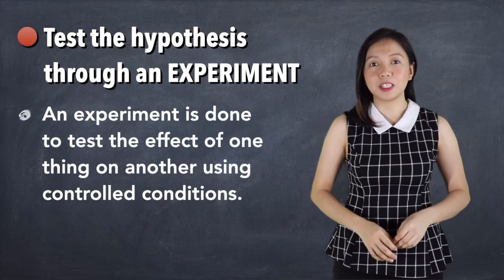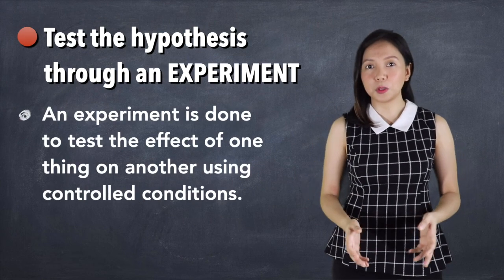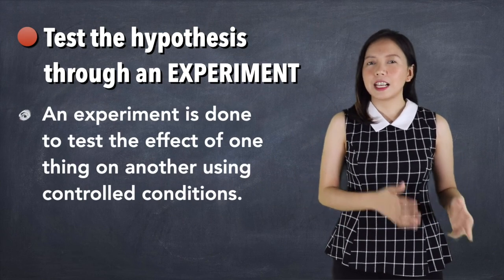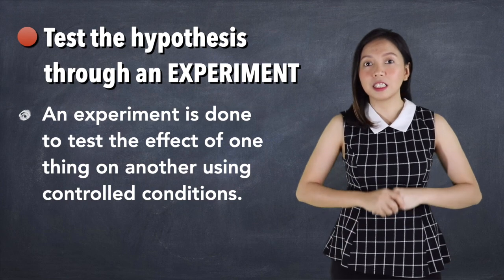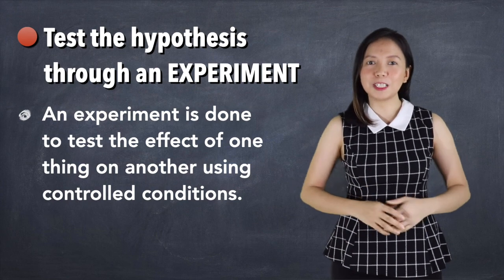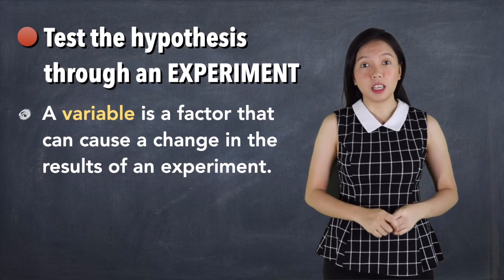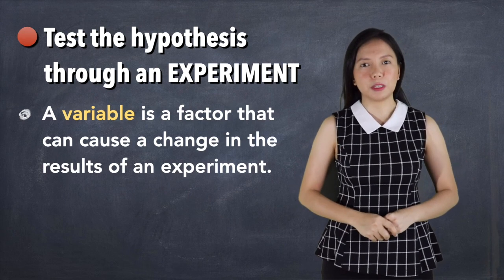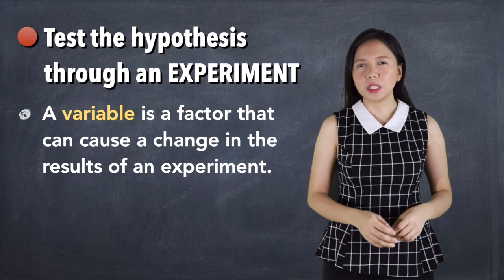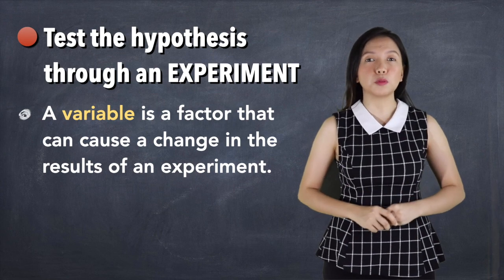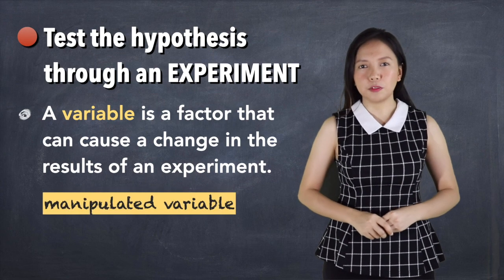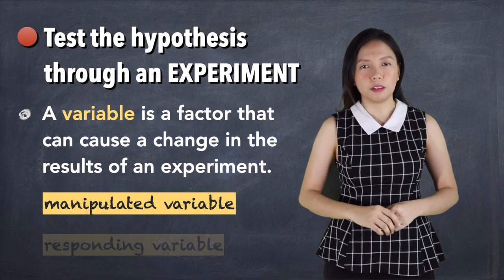The fourth step is to test the hypothesis through an experiment. Testing the hypothesis means conducting an experiment, which is the fun part. A variable is a factor that can cause a change in the results of an experiment. An experiment usually consists of at least two variables. The manipulated variable and the responding variable.